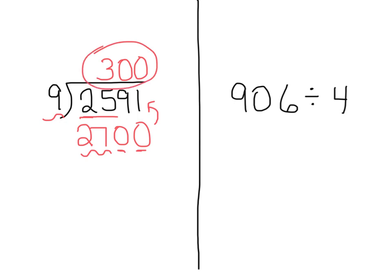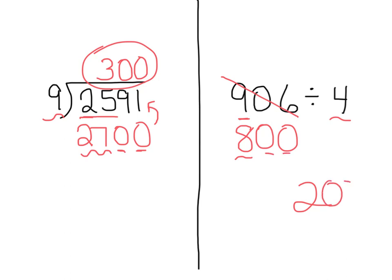Now let's try 906 divided by 4. Does 4 divide into 9? Yes. So I need to think of a number close to 9 that 4 divides into. 8. So I'm going to change 906 to 800. Here's my basic fact: 8 divided by 4 is 2, and add the two zeros. 906 divided by 4 is about 200.